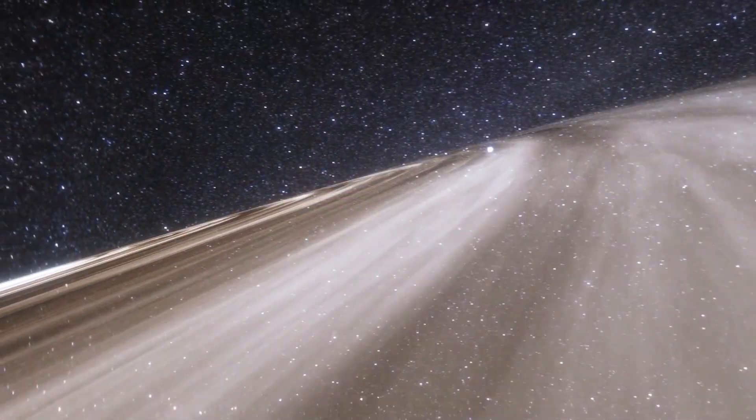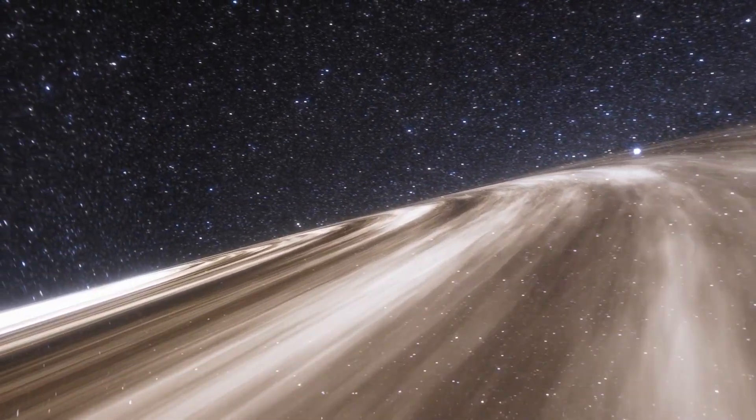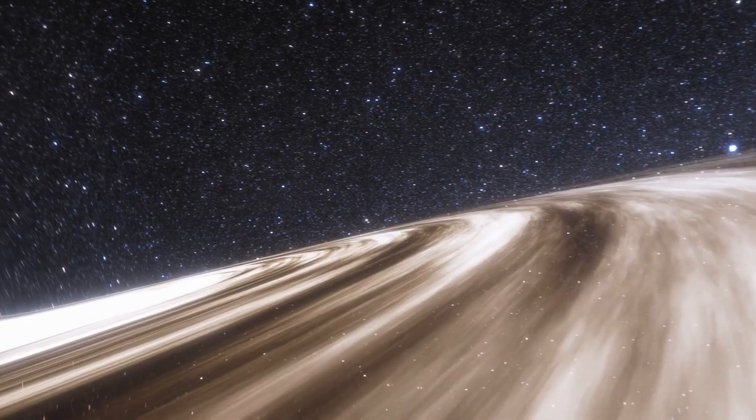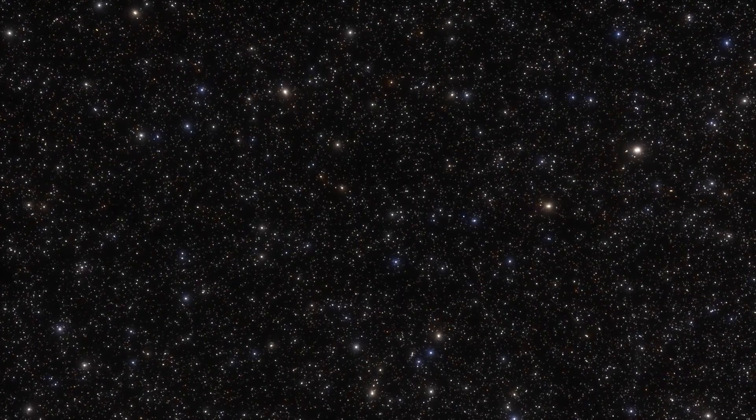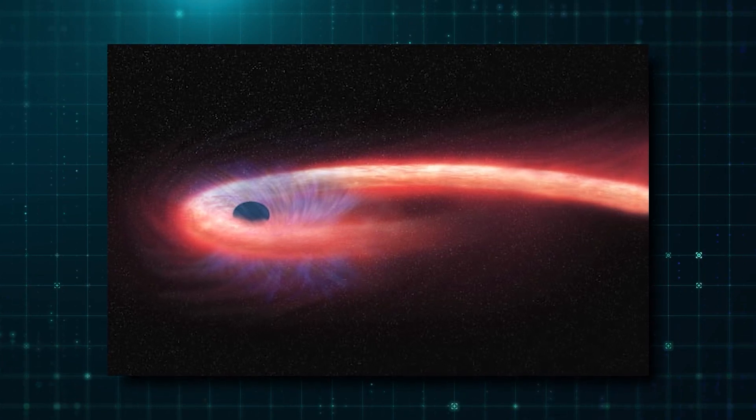When a tiny star drifted too near to a black hole in a galaxy 665 million light-years from Earth in October 2018, the star was brutally torn to pieces in dust. Researchers call it a tidal disruption event, or TDE.